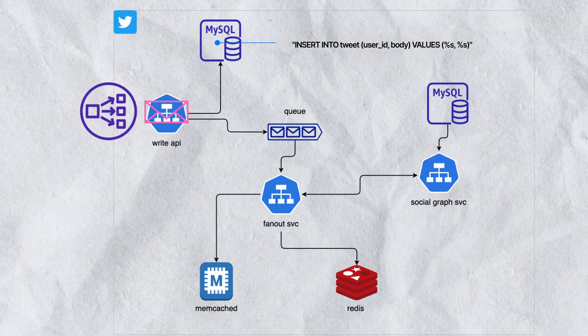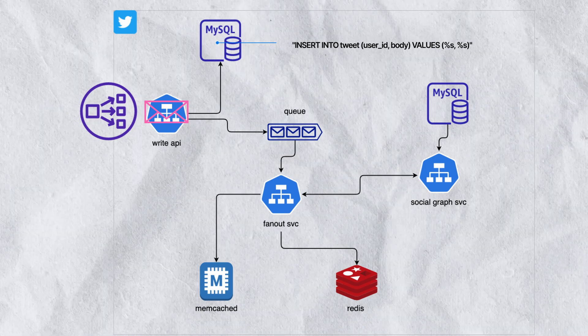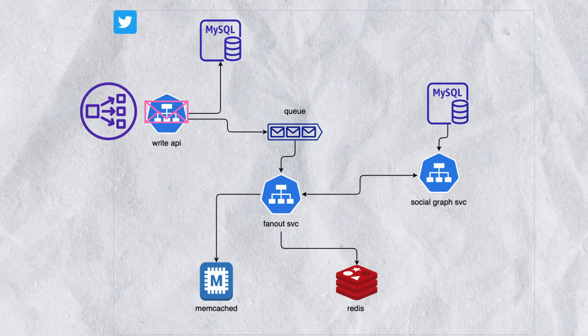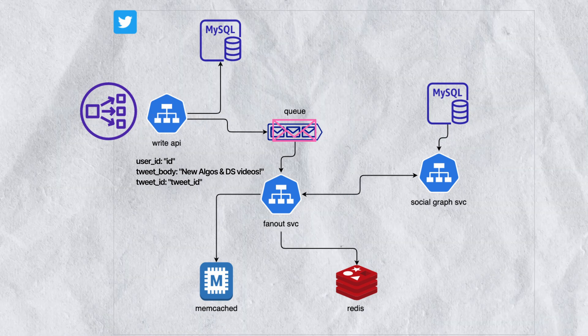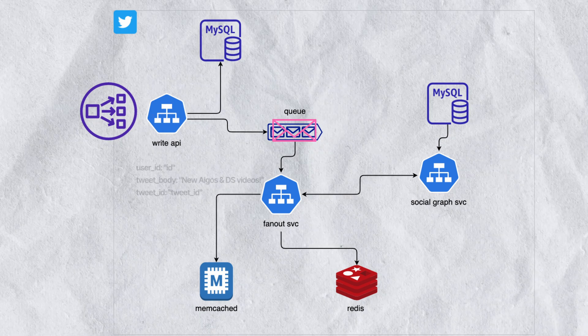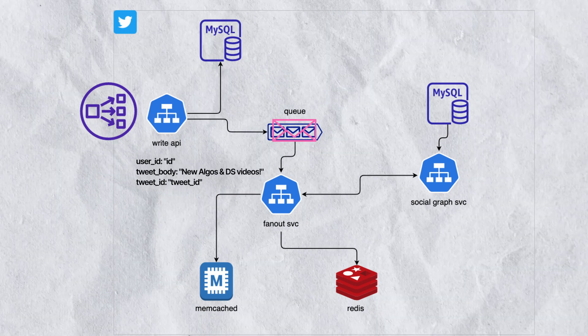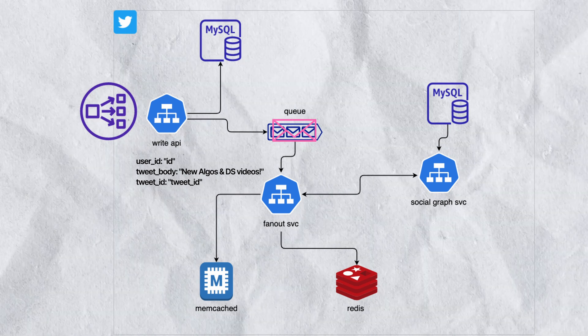After inserting the tweet, we'll get a tweet ID, which is now part of our payload. This payload will then be added to this queue as a message. That message is going to contain the user ID, the tweet body, and the tweet ID.